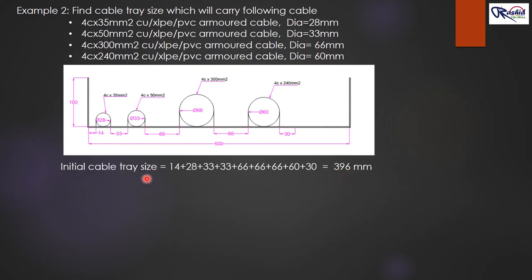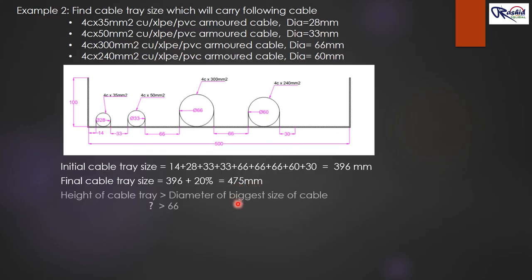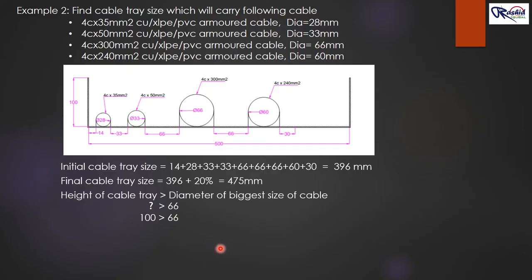These are the initial values. We need to add 20 percent extra for the final cable tray size. After adding 20 percent, it becomes 475 mm. Since 475 mm is not a standard market width, we select the next higher available size, which is 500 mm. For the height, the formula is the same: height must be greater than the diameter of the biggest cable, which is 66 mm. The next available size greater than 66 mm is 100 mm. Therefore the final selection is a 500 × 100 mm cable tray.